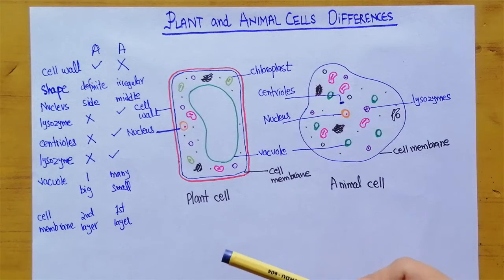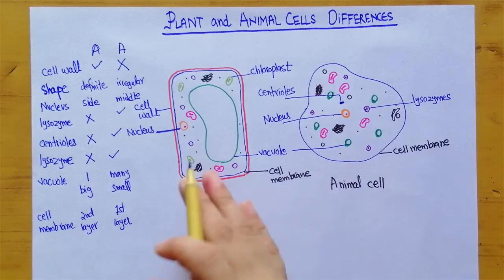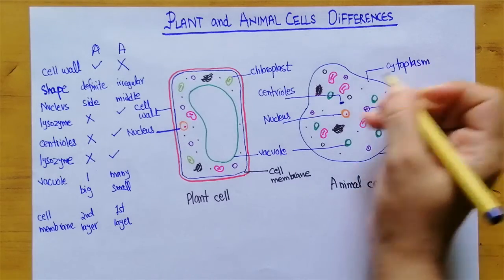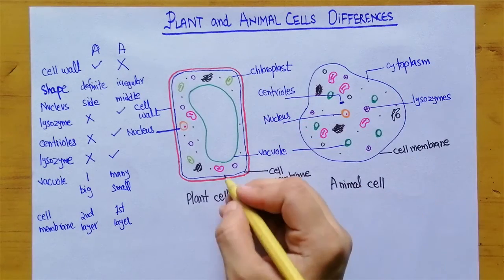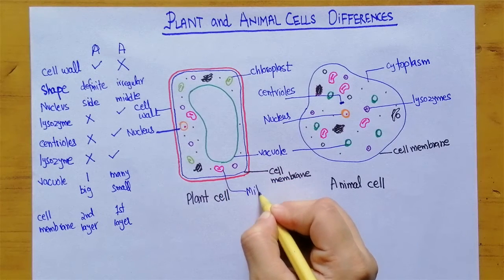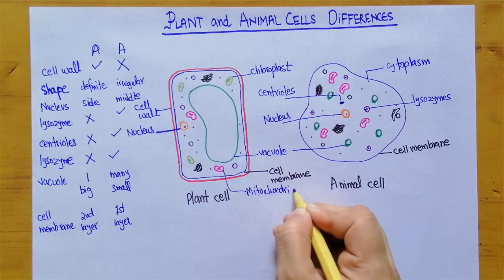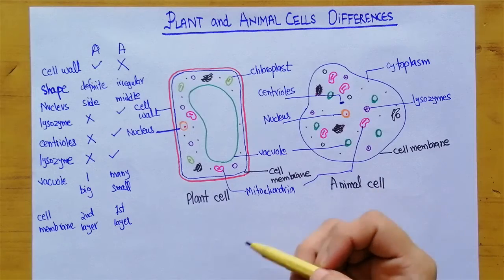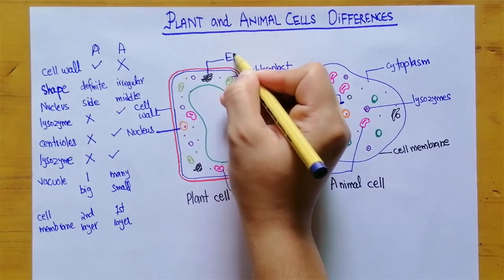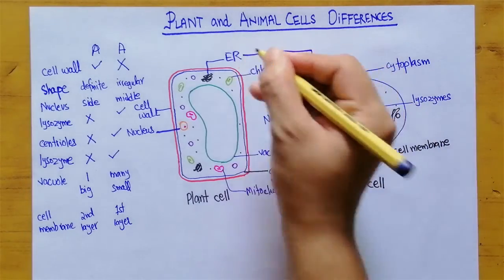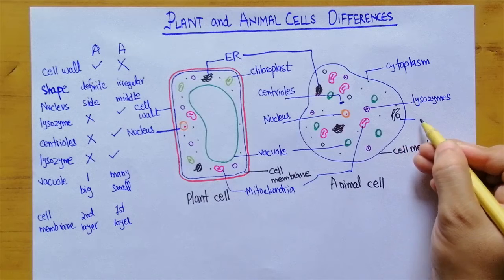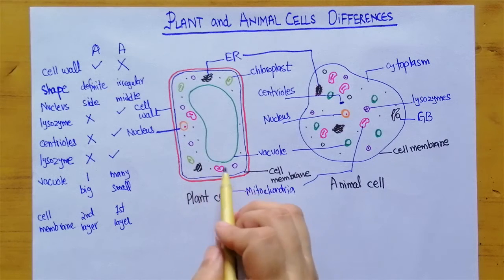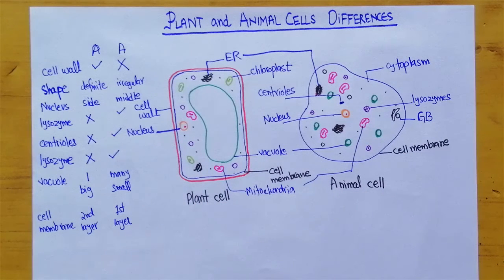Along with these differences, there are many things which are common between both types of cells. For example, both have cytoplasm, both have mitochondria, both have endoplasmic reticulum, and they also have Golgi bodies — all of these are present in both plant and animal cells.